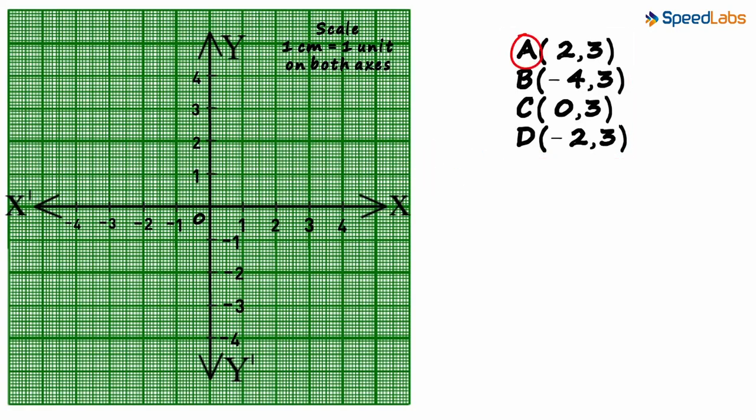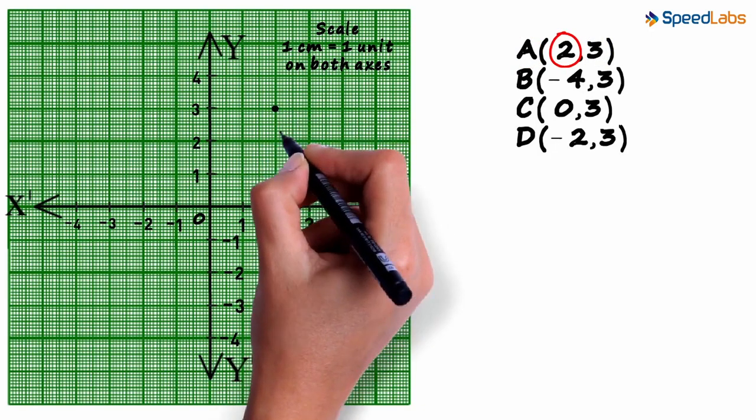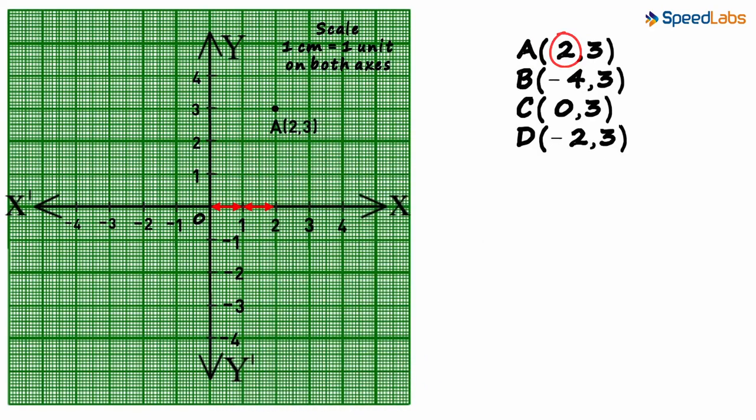For A, 2 is the x coordinate and 3 is the y coordinate. So the point A will be here. 2 units on the x axis and 3 units on the y axis.